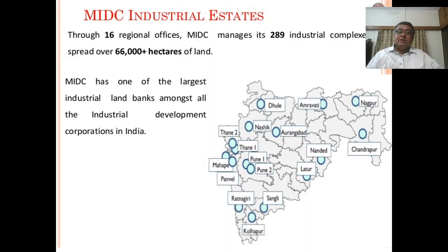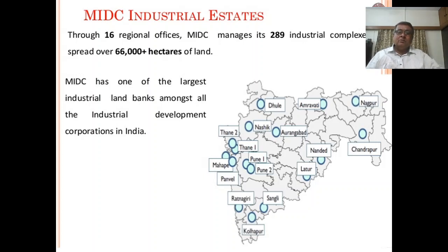MIDC has 16 regional offices and manages its 289 industrial complexes spread over more than 66,000 hectares of land. MIDC is one of the largest industrial land banks among all the industrial development corporations in India.